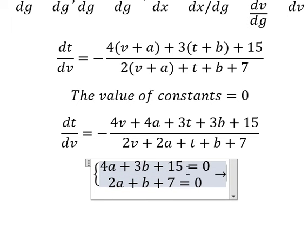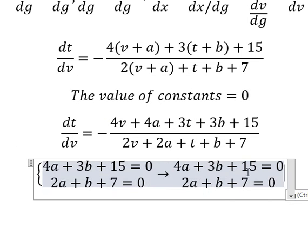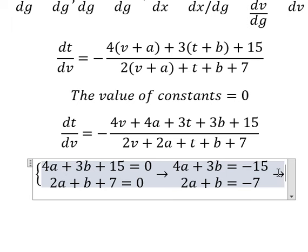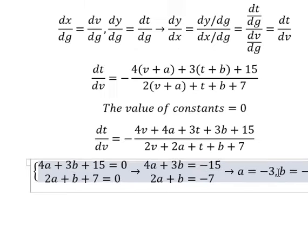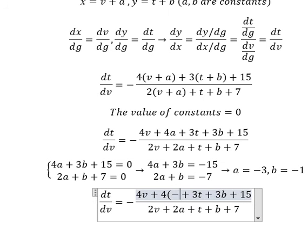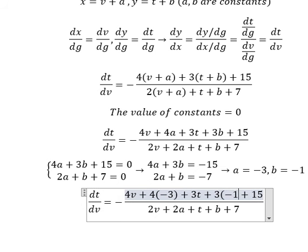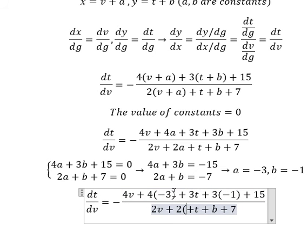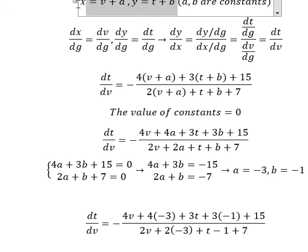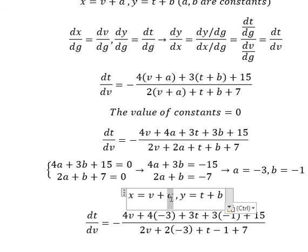Now we move 15 and 7 to the right-hand side. We need to find the solutions for A and B. So A equals negative 3 and B equals negative 1. Now we put A and B back into the equation.